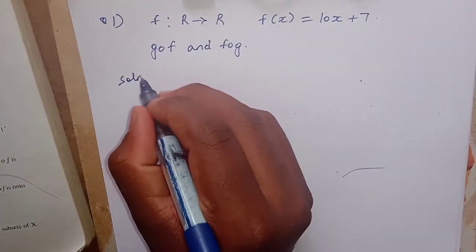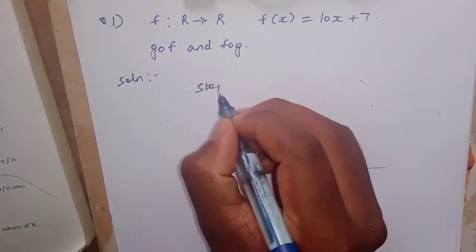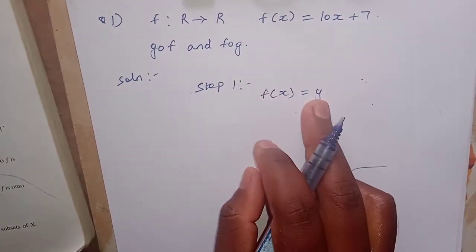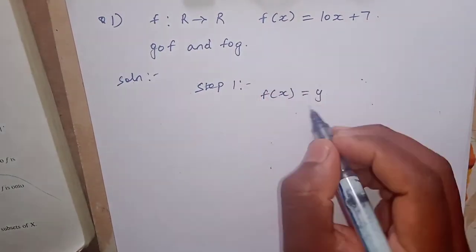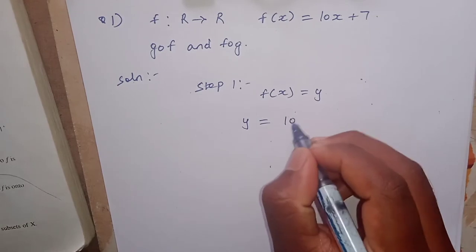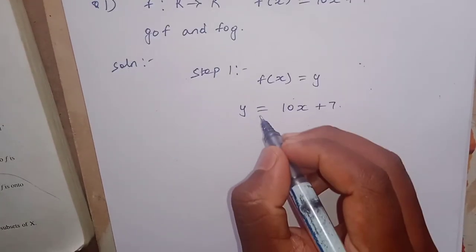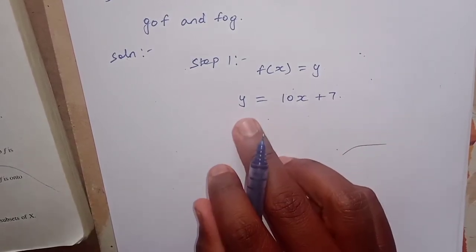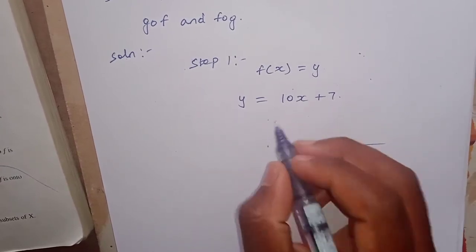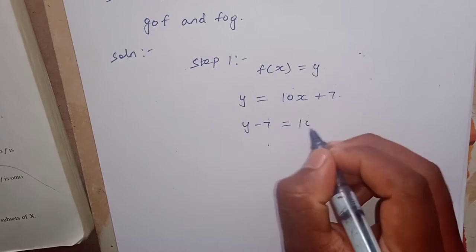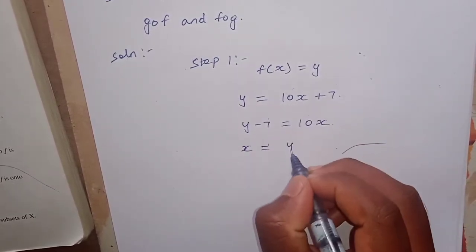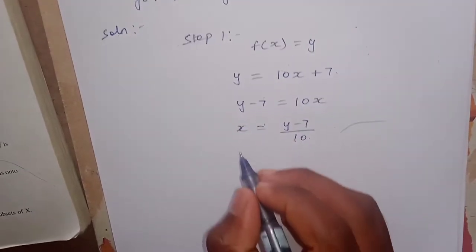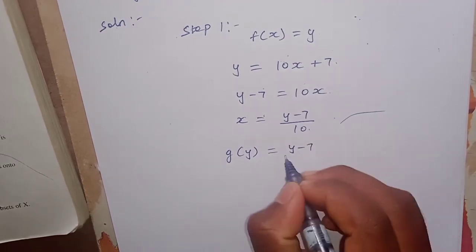Solution — Step 1. Let f of x equal to y. I am taking f of x and rewriting as y. So y is equal to 10x plus 7. Therefore, y minus 7 is equal to 10x. We need only x. Therefore, g of y is nothing but y minus 7 divided by 10.